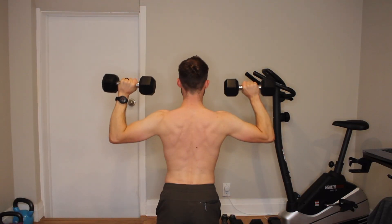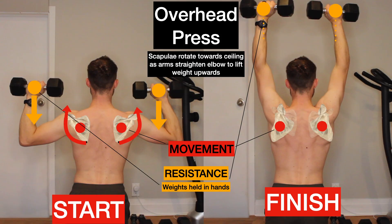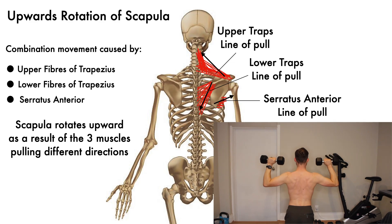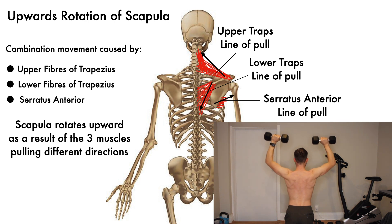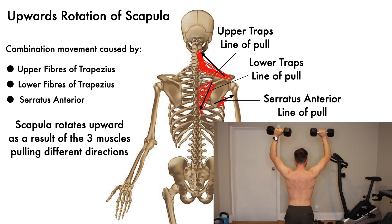An exercise I would prefer functionally and for most people is the overhead press. Done with good technique and movement, this motion will involve the scapula upwardly rotating and creating a powerful platform for the deltoid and other muscles of the shoulder to use in lifting the weight up towards the ceiling. It isn't as focused onto just the scapular upward rotation itself, but overall this is an exercise I believe is more useful in most training programs.